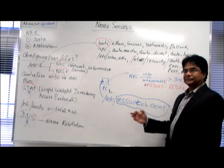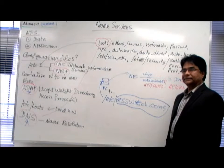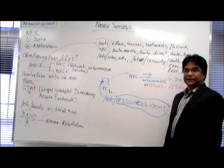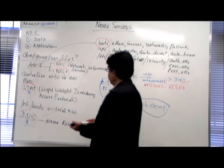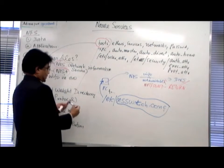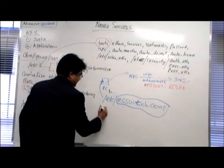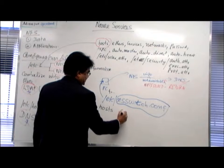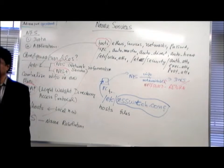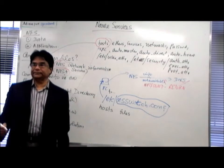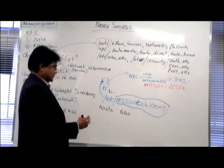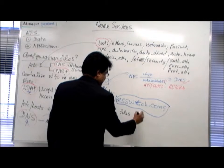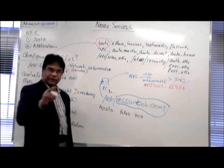This NSSwitch.conf file will have information about what to access first, then what to access next. It will say: for host information, use your local files. If the information is not in the local file, then go to NIS. If the information is not there in NIS, then go to DNS.